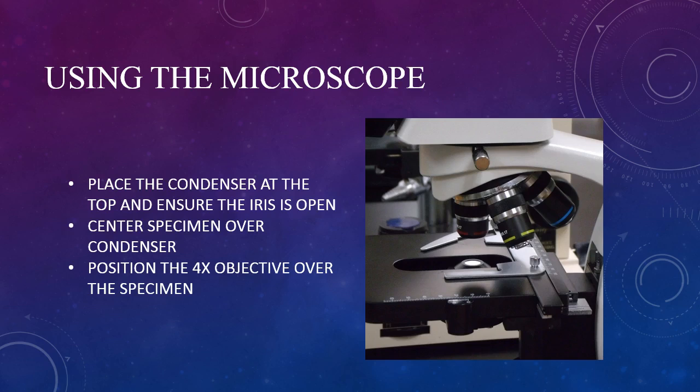The condenser's height is controlled by a small knob at the back of and below the stage. Using the stage controls, center the specimen over the condenser — that's the specimen, not the slide.